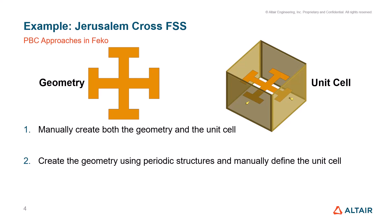In the second approach, after using predefined shapes, you then manually define the periodic boundaries. The third approach is to do everything using the options under periodic structures. The demonstration will clarify the differences between these three approaches, so let us look into that.